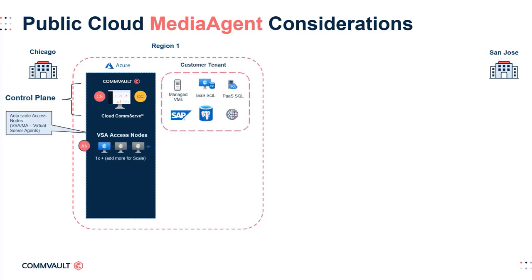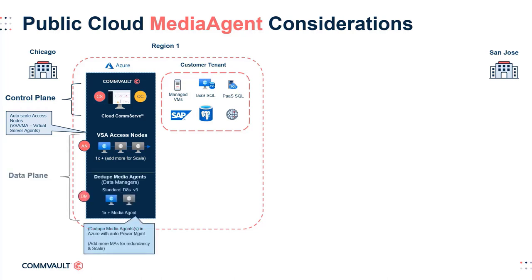Access nodes are used to read the data in question and are deployed as virtual machines within Azure, which can be scaled automatically using Commvault technologies to meet demand as it happens. With Commvault's intelligent data services, assessments of your defined recovery point objective and throughput averages are automatically calculated to determine how many access nodes need to be deployed through Commvault's auto-scaling features. Media agents are also located within the region to act as data movers and hosts of the deduplication databases, with high-performing disks provisioned to manage deduplication-related operations.